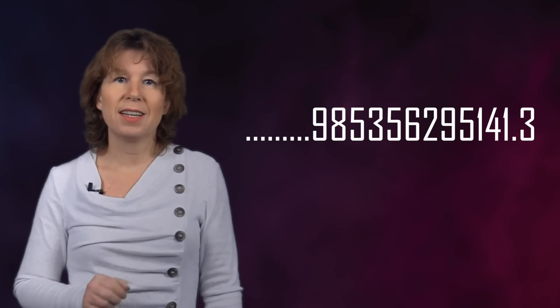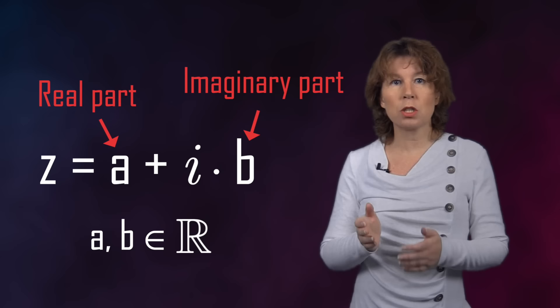Fun fact: this doesn't work for numbers that have infinitely many digits before the decimal point. Yes, that's a thing — they're called p-adic numbers. Maybe we'll talk about this some other time. Complex numbers are all numbers of the type A plus i times B, where A and B are real numbers. A is called the real part and B the imaginary part of the complex number.